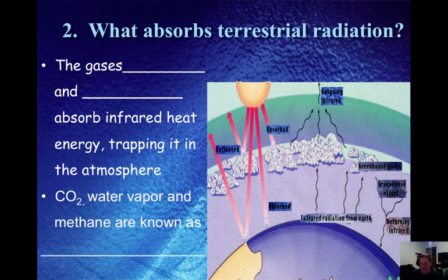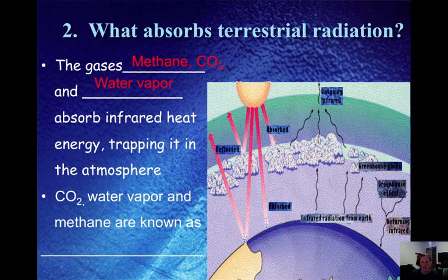What absorbs terrestrial radiation? Earth is giving off infrared energy, and we have particular gases in our atmosphere called greenhouse gases — methane, carbon dioxide, and water vapor — that absorb this infrared energy. They act as blankets in the atmosphere, trapping in the heat re-radiated from Earth's surface and keeping the Earth's surface at a temperature that is able to sustain life.